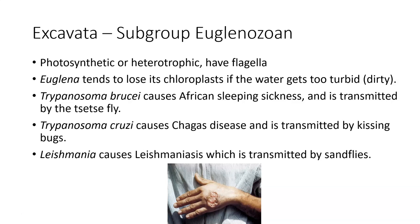Euglena is one that can be either photosynthetic or heterotrophic during the course of its life. It can be photosynthetic if water quality is good and light is penetrating the water column fairly well, but if the water becomes too turbid due to erosion, nutrient pollution, or other factors, it will actually expel its chloroplast and switch to a heterotrophic state. So Euglena can actually be used to determine whether or not water quality is good.